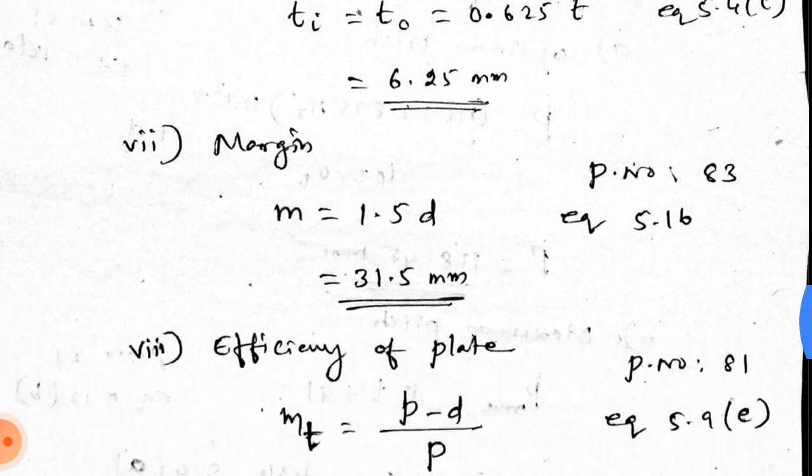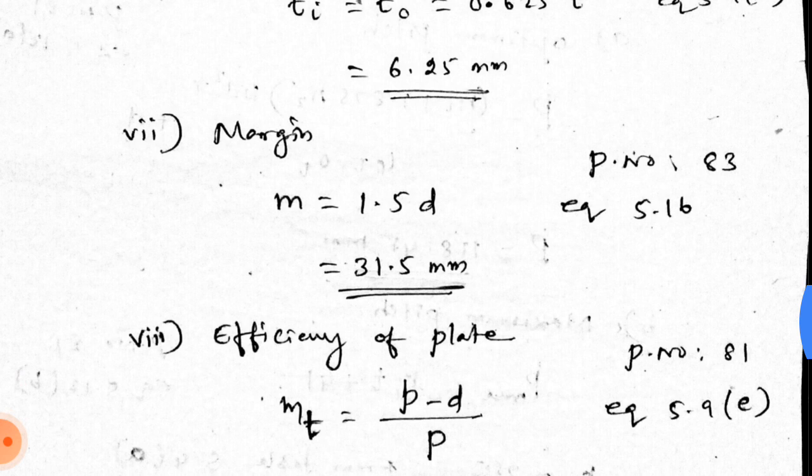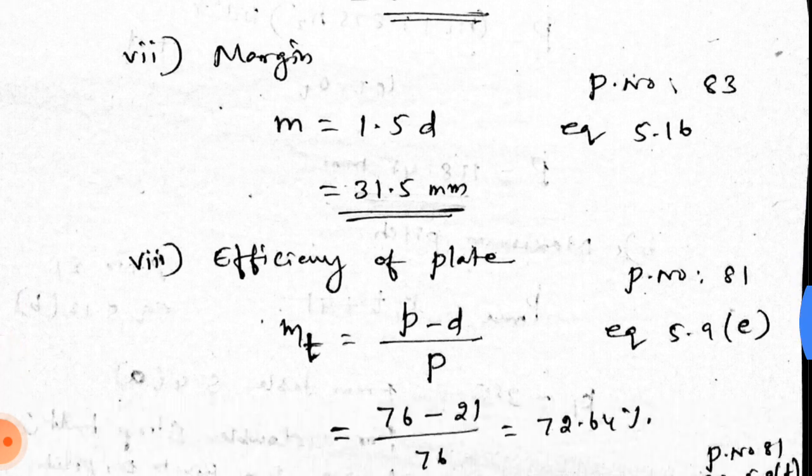The seventh step is the margin. The margin M = 1.5 × D, from page 83, equation 5.16. The margin value is 31.5 mm.